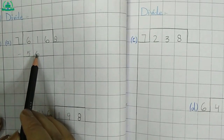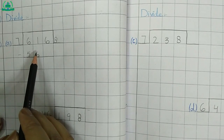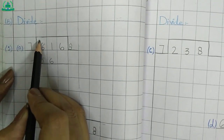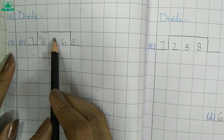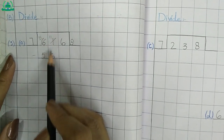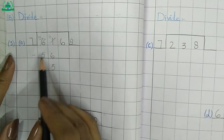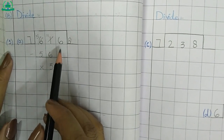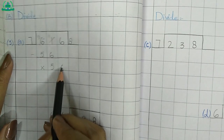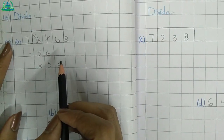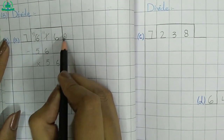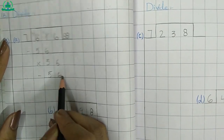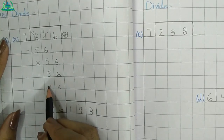Minus: 1 minus 6 — we cannot subtract 6 from 1, so we borrow 1 from 6. 5 is left here, and 1 becomes 11. 11 minus 6 is 5. 5 minus 5, no remainder. Now we move to our next digit, 6. How many times does 7 go into 56? 7 times 8 is 56. Minus 6 minus 6, no remainder. 5 minus 5, no remainder.